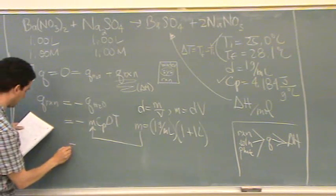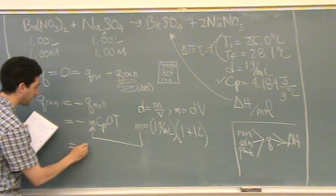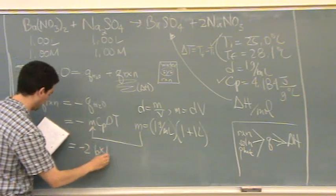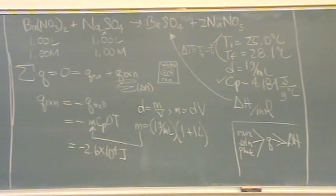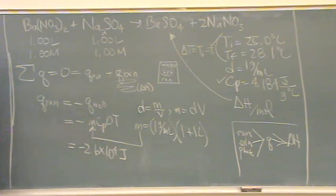Oh, yeah, we got minus, is this where you have 2.6 times 10 to the 4 joules? Does that look right? Minus, and we multiply M Cp and delta T. Is that okay?